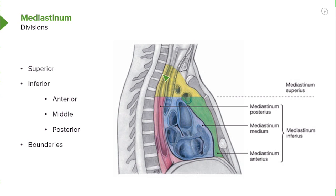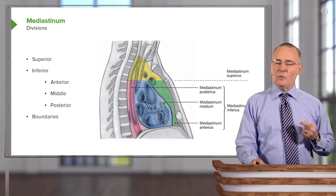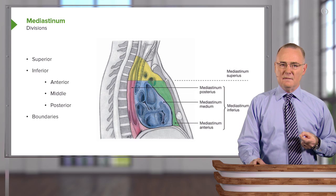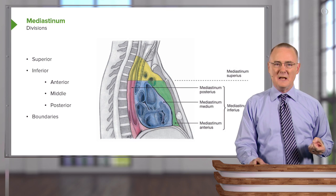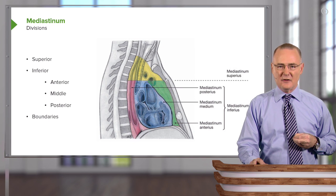Everything above is in the superior mediastinum. Anything below is a resident of your inferior mediastinum. Now again, we can subdivide the inferior mediastinum into an anterior mediastinum, middle mediastinum, and a posterior mediastinum.